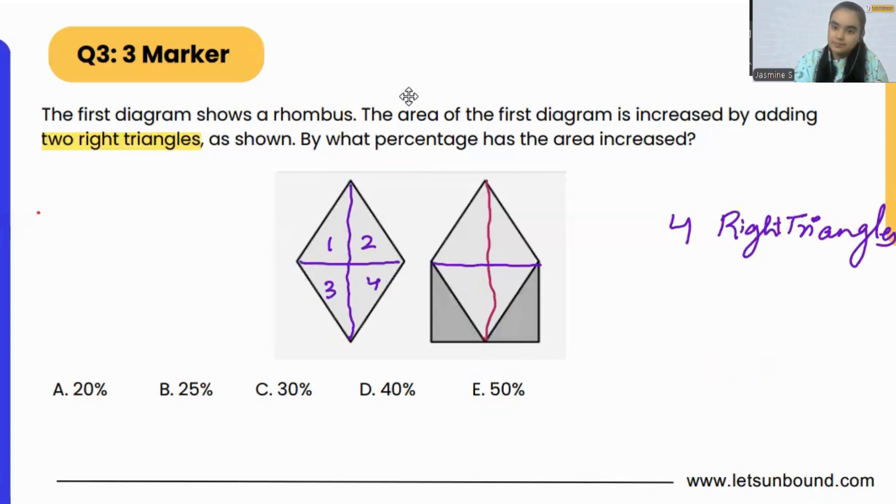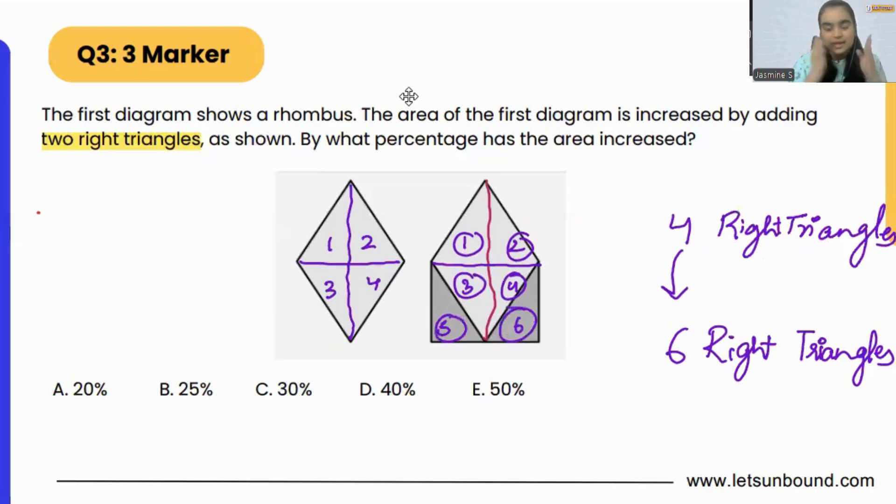In a rhombus there are one, two, three, four - four right triangles. Now these four right triangles have been increased to six right triangles: one, two, three, four, five, and the sixth one.